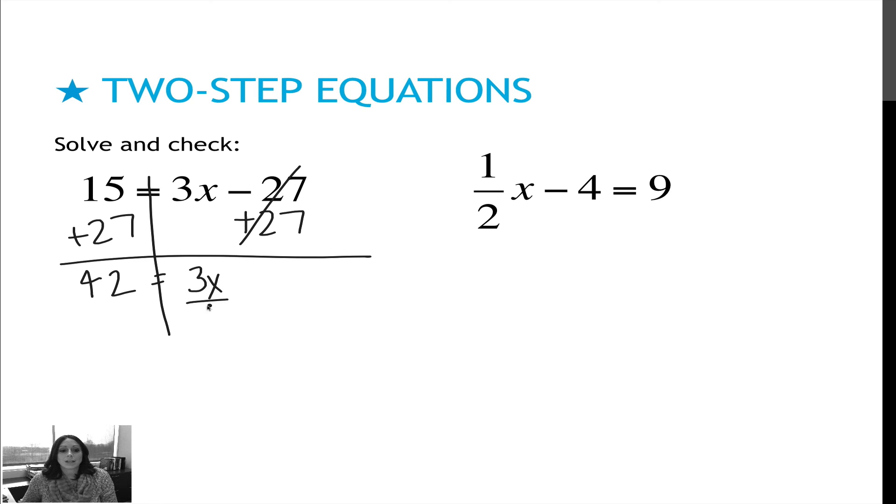Now, I'm trying to get x by itself, so I divide by 3. On this side, those 3's cancel, which just gives me x. On this side, if I divide by 3, I get 14. Again, you can plug that in and do the check to make sure it works. And if you would rather put the x on the left side, as most people do, you can certainly just rewrite it as x equals 14.